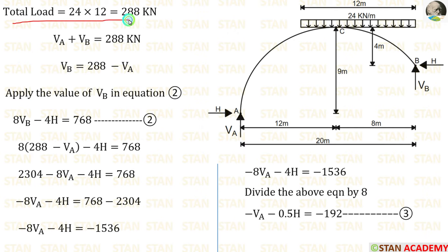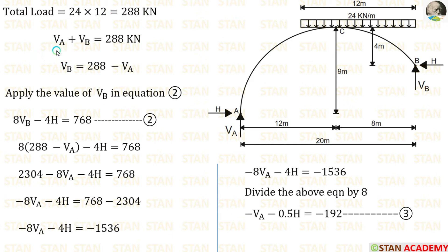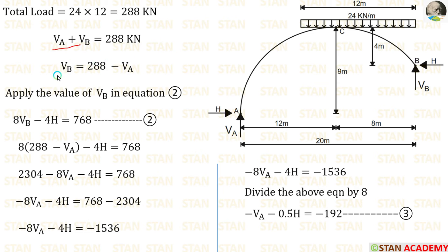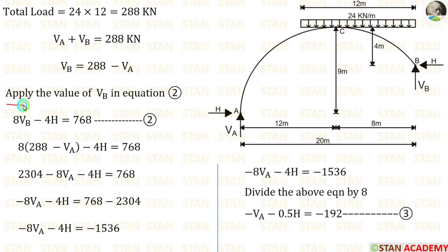From this arch, we can calculate the total load. We are having only one load, that is UDL of 24 kN per meter acting over a distance of 12 meter. So the total load is equal to 24 × 12, which gives 288 kN. We know that the summation of upward forces equals the summation of downward forces. We are having two upward forces, Va and VB, so Va plus VB equals 288 kN. Therefore, VB equals 288 minus Va. Now let us apply the value of VB in equation number 2.